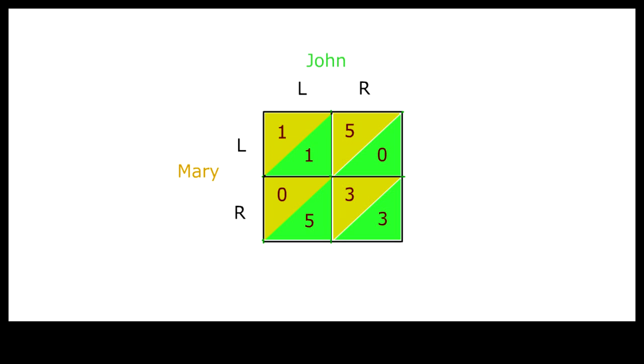For example, a typical payoff matrix for a PD game may look like this where the number represents cardinal payoff indexes with high numbers indicating higher payoffs, and L represents the left choice and R represents the right choice.